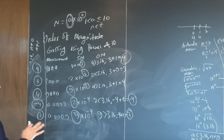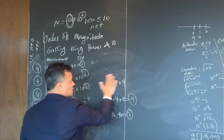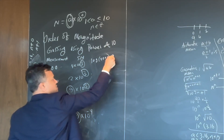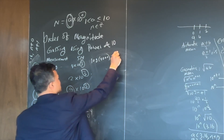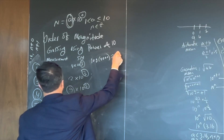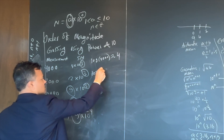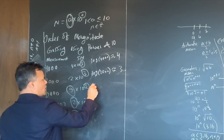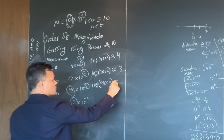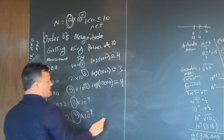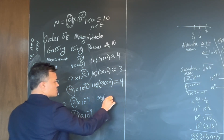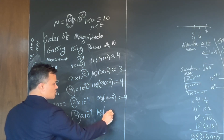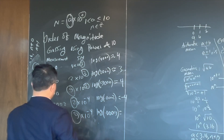You can also do this using the log function on a calculator. Log of 4000 — whatever the calculator gives you, round to whole number, which is 4. Log of 2000 rounds to 3. Log of 9000 rounds to 4. Log of 0.0002 rounds to the same negative 4. These give exactly the same results as the rounding rule.